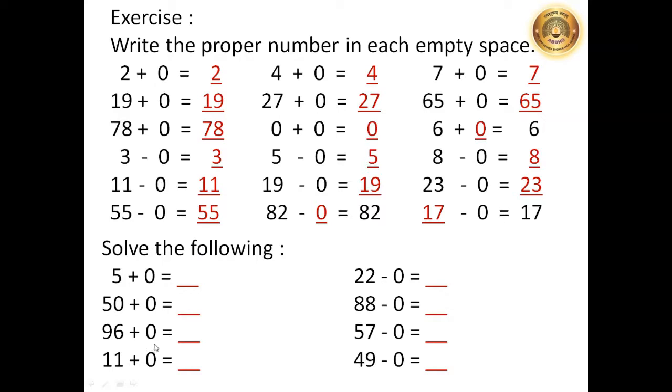96 plus 0 is equal to dash, 11 plus 0 is equal to dash. 22 minus 0 is equal to dash, 88 minus 0 is equal to dash, 57 minus 0 is equal to dash, 49 minus 0 is equal to dash.